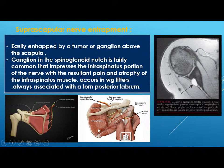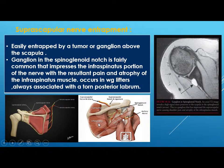The suprascapular nerve arises from C4, 5, 6 nerve roots from the brachial plexus, extends over the scapula and gives branches to the supraspinatus and infraspinatus. Any ganglion at the spinoglenoid notch can compress the infraspinatus branch, causing atrophy and pain in the infraspinatus muscle — this is suprascapular nerve entrapment. It is always associated with a torn posterior labrum.